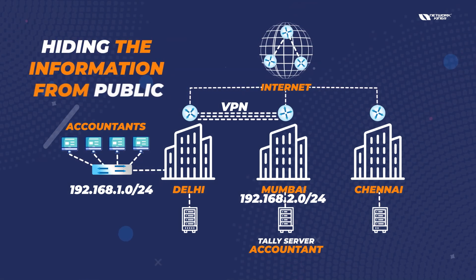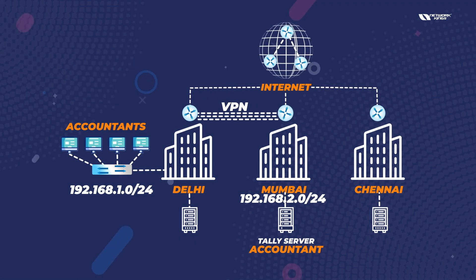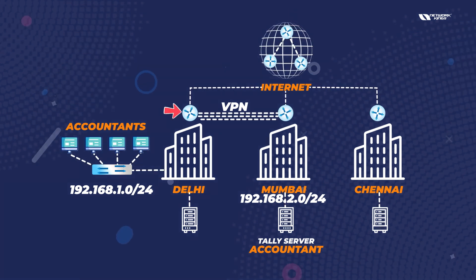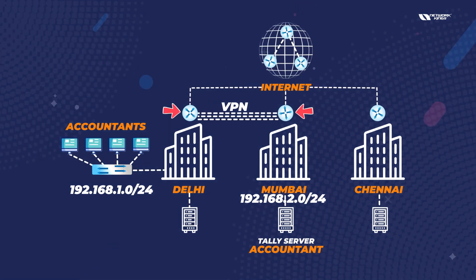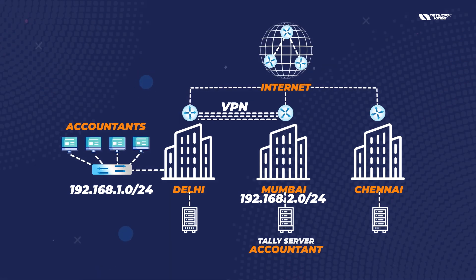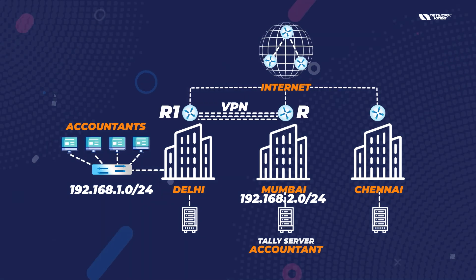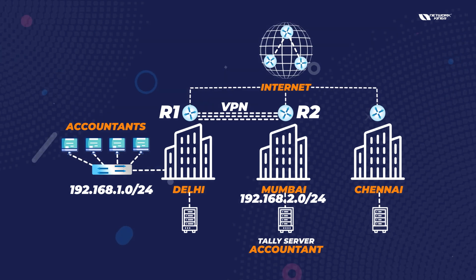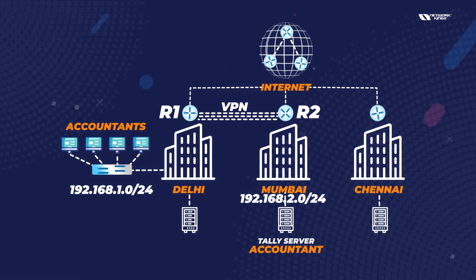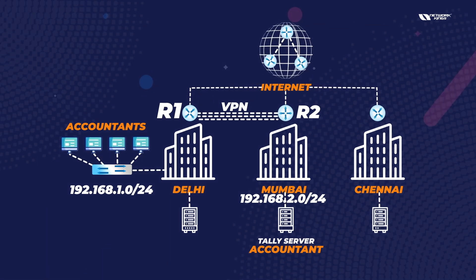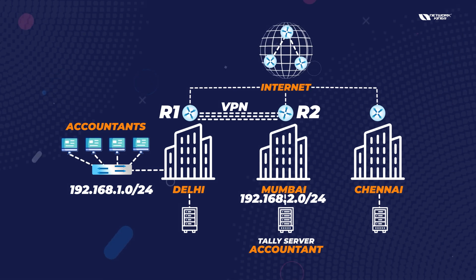We are hiding the information from the public — we are not actually dealing with private-to-private IP directly. We are dealing from this router to this router. The ISP will see that traffic is going from the Delhi router to the Mumbai router, but in reality we are sending our internal traffic inside the tunnel, which is built between R1 and R2 — between Delhi and Mumbai.